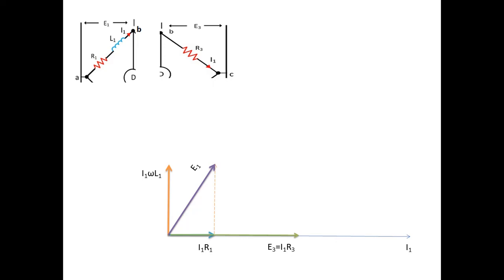Now, the summation of E1 and E3 will give us the total voltage E. We have the total voltage E and E1.